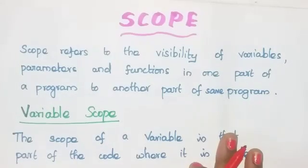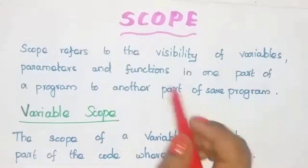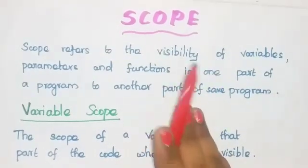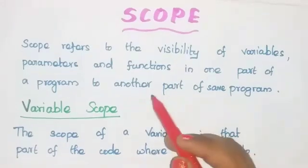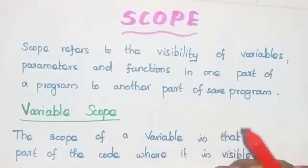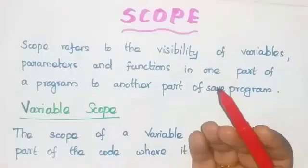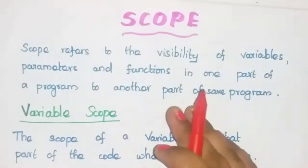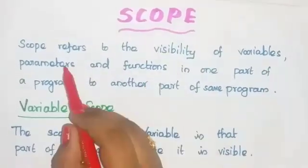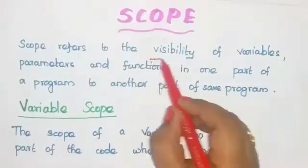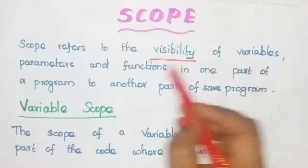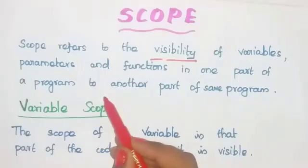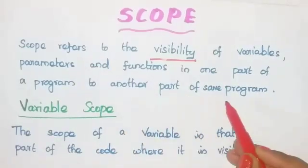Hi students, in this video I am going to explain about the concept of scope. So what is scope? Scope is nothing but the lifetime of a variable. So whatever the object, variable, or function you are creating, that's life — you call it as scope. Scope refers to the visibility of variables, parameters, or functions in one part of your program to another part of the same program.